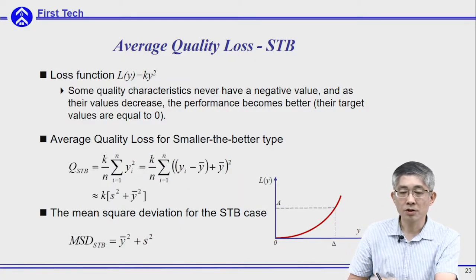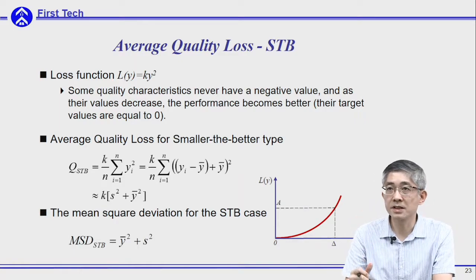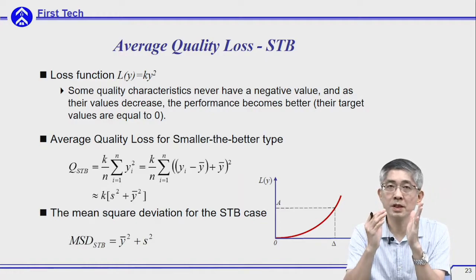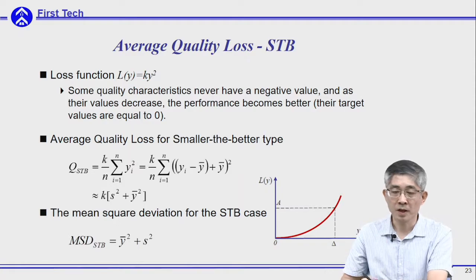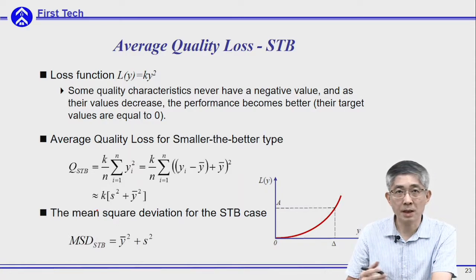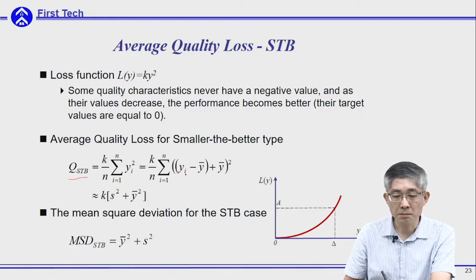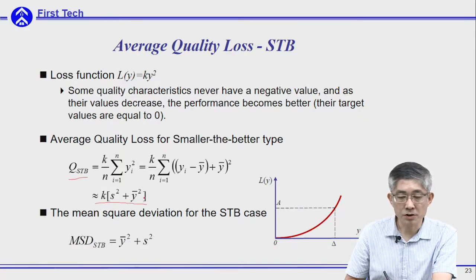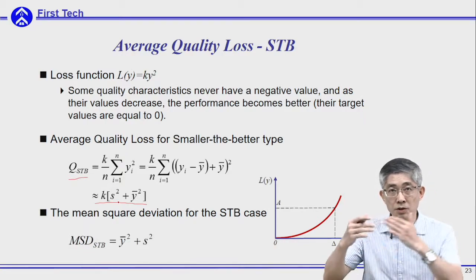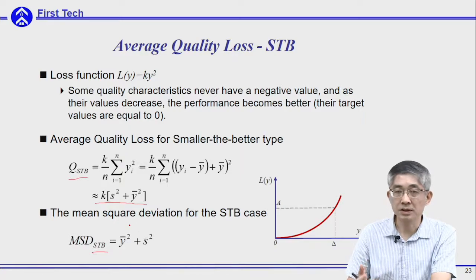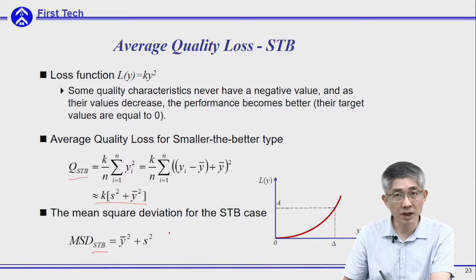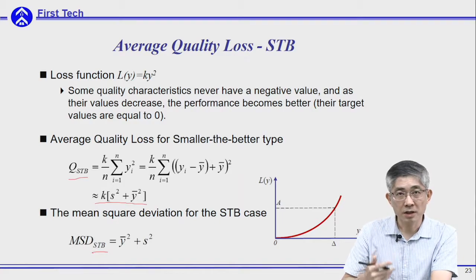For the smaller-the-better case, the loss function equals k multiplied by y squared. Most of the time, the output is a positive number and we want it to be as small as possible — effectively, the target is zero. The average quality loss is very similar to the nominal-the-best case, and it can be represented by two parts: the first associated with the mean output, and the second with the distribution. A smaller output and smaller deviation both reduce the average quality loss.